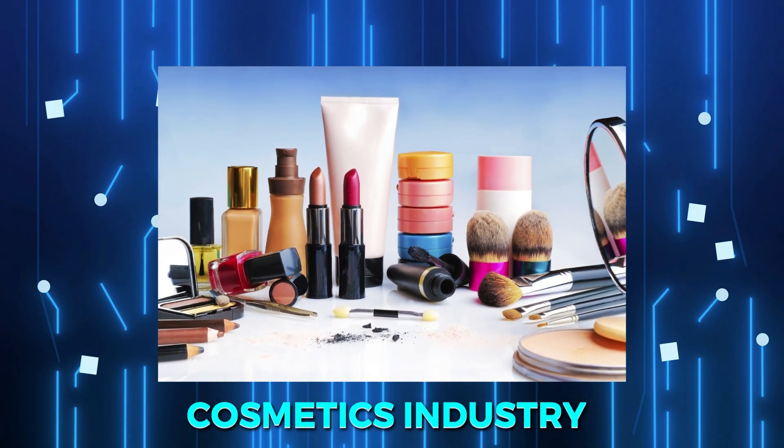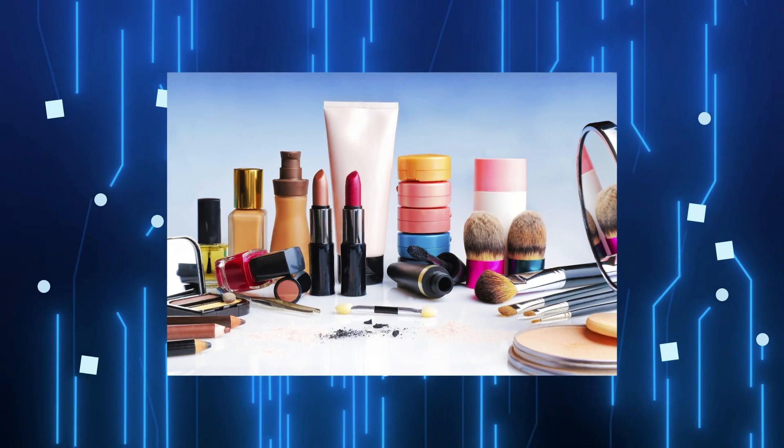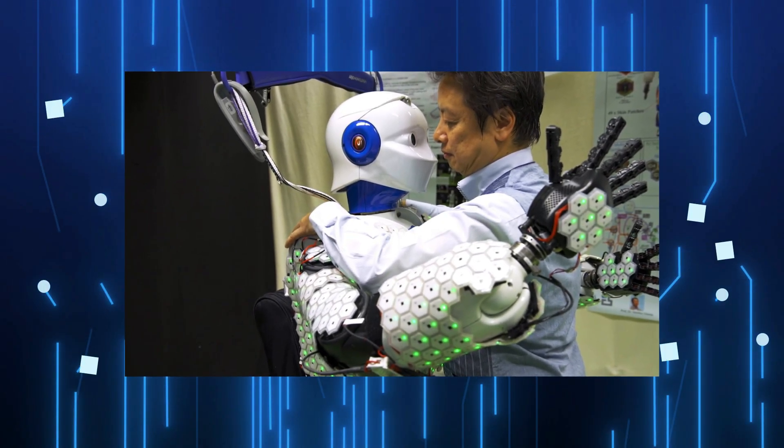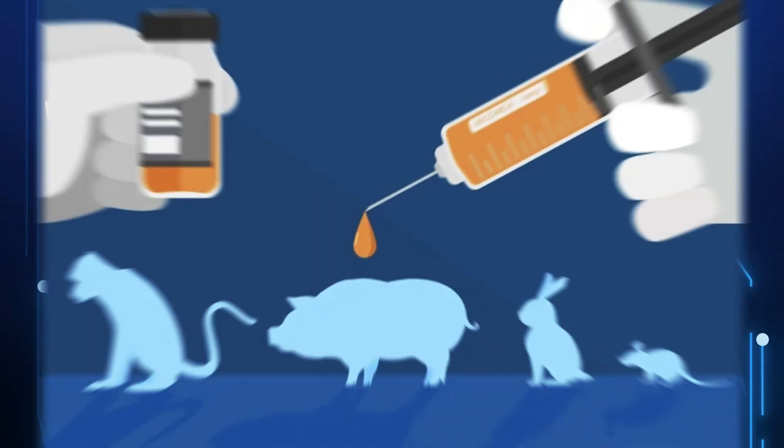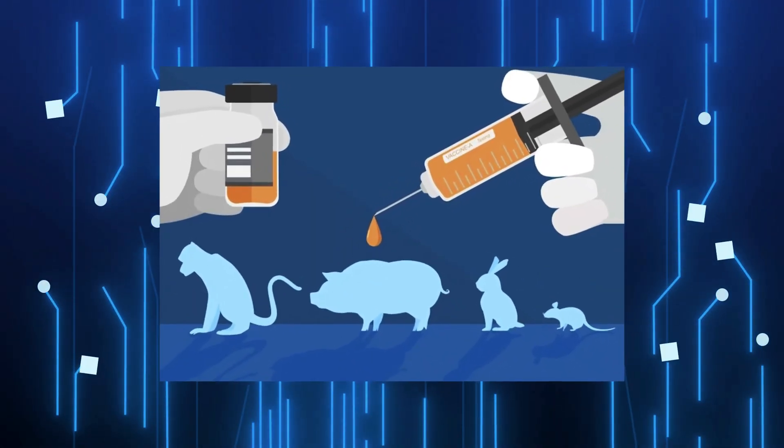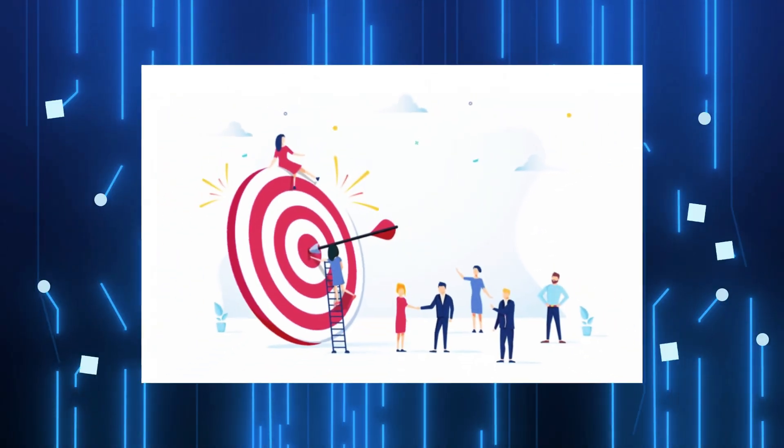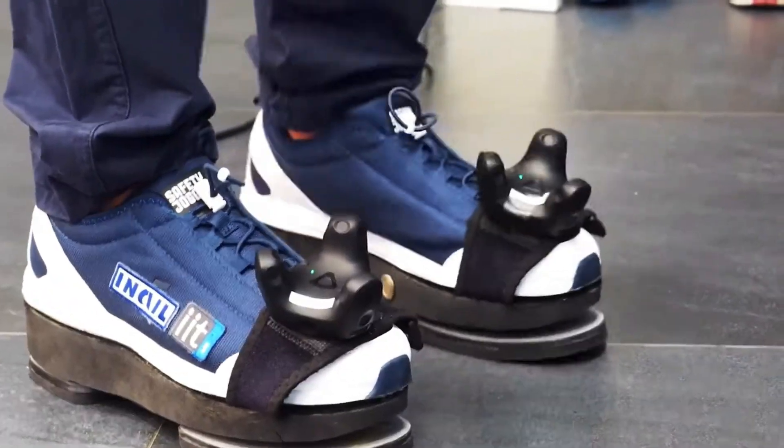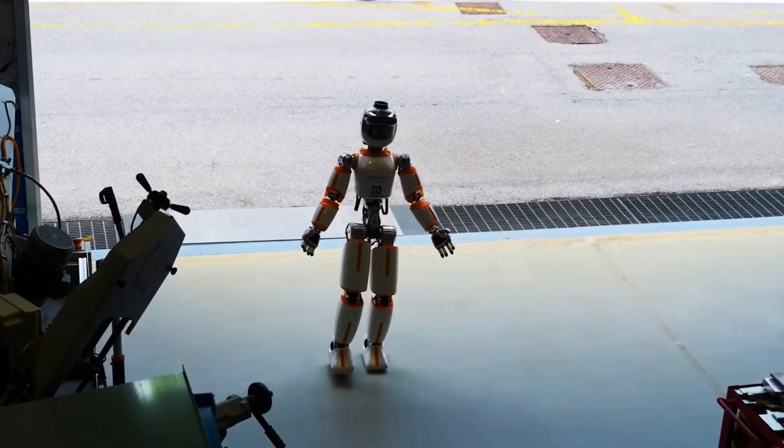The cosmetics industry is also exploring the potential of living robot skin. By testing new products on robotic skin, companies can reduce their reliance on animal testing, leading to more ethical and humane research practices. This could also lead to more accurate results, as robotic skin can be engineered to closely mimic human skin, providing a better platform for testing the safety and efficacy of cosmetics.